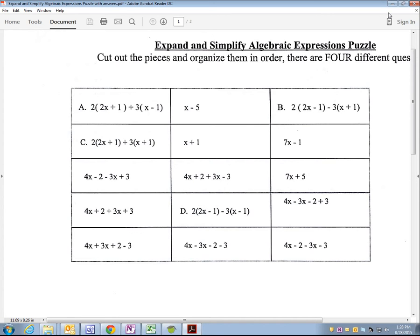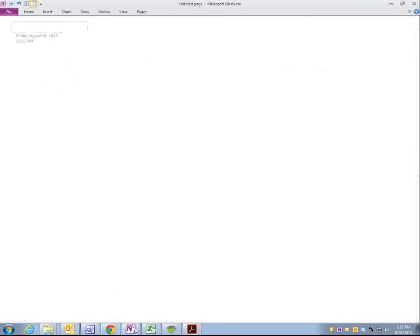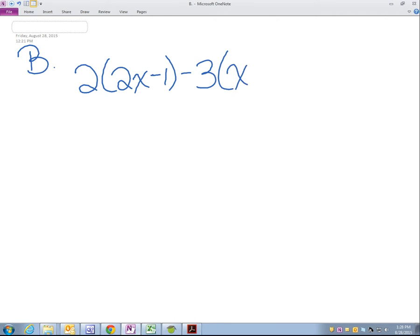So we're going to take B, we're going to do this one. So it is two times the quantity two X minus one, minus three times the quantity three X plus one. I'm going to rewrite that. Why don't you rewrite it also on the back side, please? Two times the quantity two X minus one, minus three times the quantity X plus one. I'm going to keep it consistent.